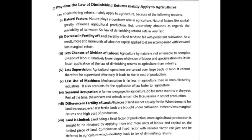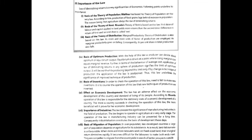Next is importance of the law. First is the basis of the theory of population. Population theory was given by Malthus. According to this theory, production of food grains lacks behind the increase in population.